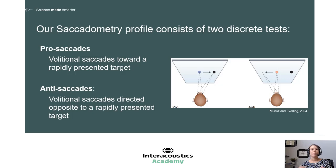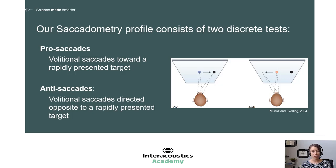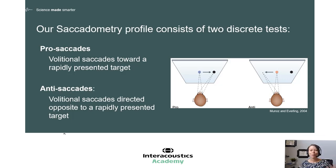Anti-saccades, the second subtest in saccadometry, is a little bit different. The patient will again see a center dot and a dot that pops up to the right or to the left. However, this time you're instructing the patient — instead of looking at the dot, I want your eyes to go in the equal and opposite direction of where that dot goes. In this graphical example, the dot pops up to the right and the patient correctly moves their eyes equal and opposite to the left side. As I'm explaining anti-saccades, you're probably thinking that sounds a lot more difficult — and that's because it is.